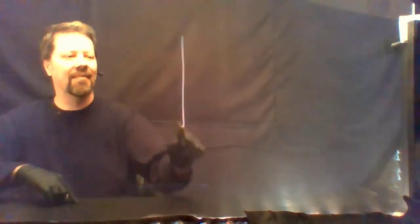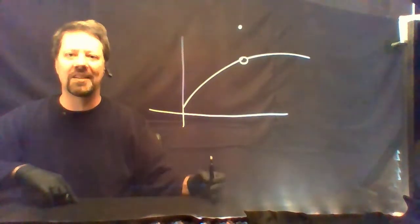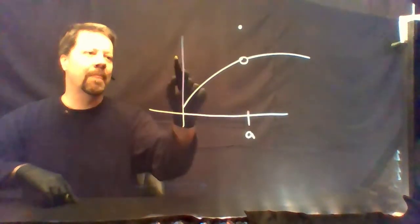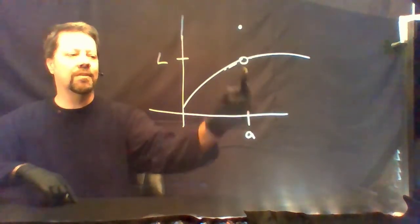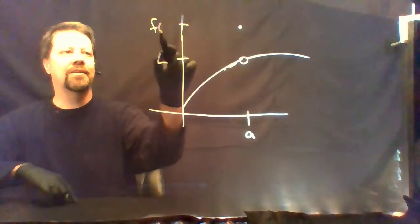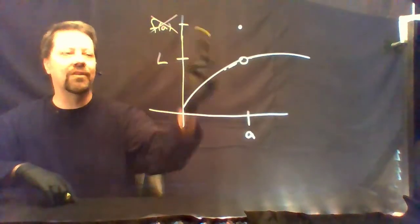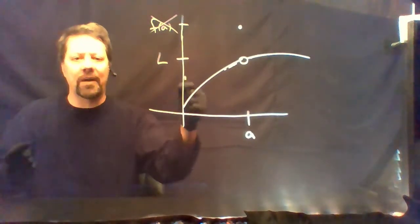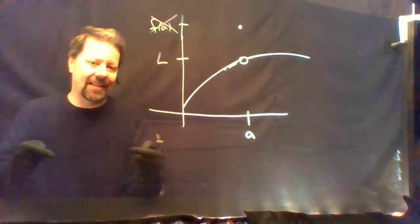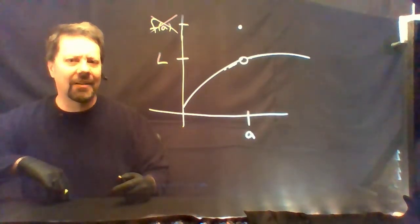So what do we really mean by limit? Let's suppose we have some function — it might have a hole in it with a displaced point at x equals a. Let's suppose this is the limit value as you tend towards x equals a in the domain, and here is the function value. When it comes to limits, we're going to entirely ignore the function value. All we want to know is what are the y values tending to as the x values tend towards a. So how do we actually define this?